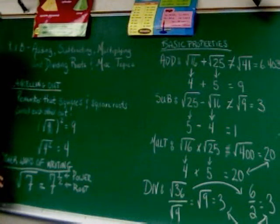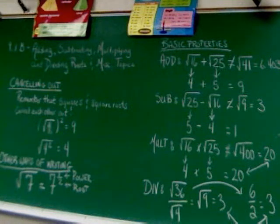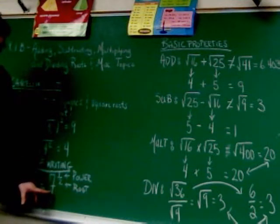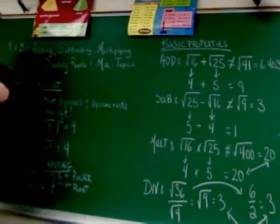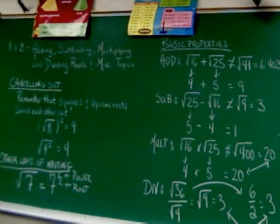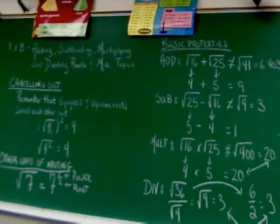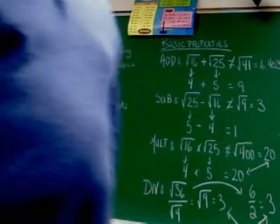There is another way to write a root, and that may be helpful. On the calculators on the computers, they do not have a square root key. If you want to find the square root of 7, you use the power function and put in 0.5 or one-half. That will take a square root for you. The top number indicates the power, the bottom number indicates the root. So it could be 2 thirds — second power, then cube root. That might be useful if you rely on a computer calculator.